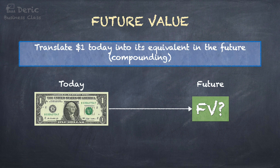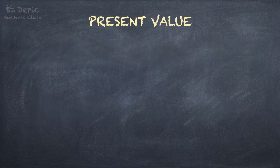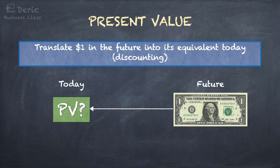What is future value? In short, we call this FV. FV translates $1 today into its equivalent in the future. This process is called compounding. What about present value, PV? PV translates $1 in the future into its equivalent today. This process is called discounting.